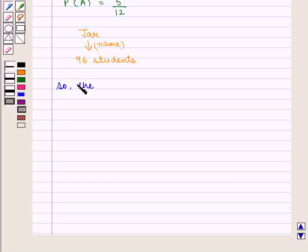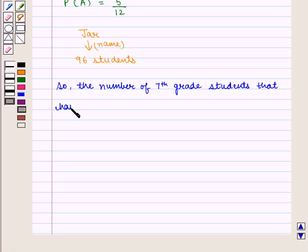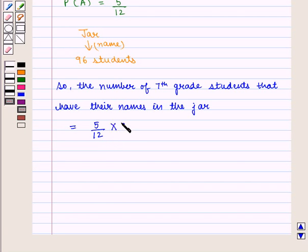So, the number of 7th grade students that have their names in the jar will be given by 5 upon 12, that is the probability of drawing a 7th grade student's name, into 96, that is the total number of names that are there in the jar.